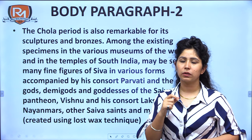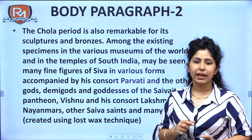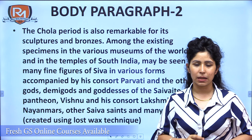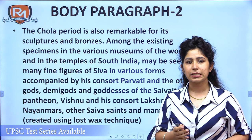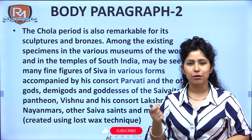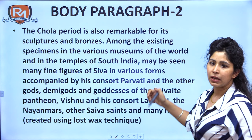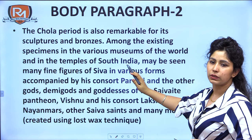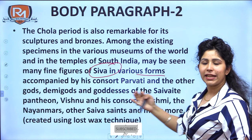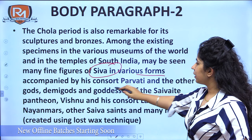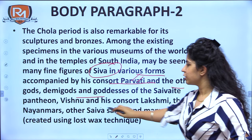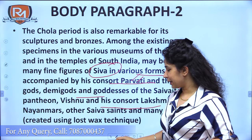Beyond temple architecture, Cholas were also famous for their sculptures and bronzes. They used the lost-wax technique exquisitely to make bronze sculptures — this connects to the current affairs discussion about idols stolen from a temple and found in a US museum. Among the existing specimens in museums worldwide and in temples of South India, one can see fine figures of Shiva in various forms — very important in Hindu mythology. Shiva is found with his consort Parvati, along with other gods and demigods, Vishnu, and Nayanar Shiva saints.